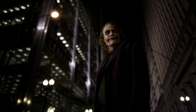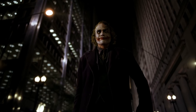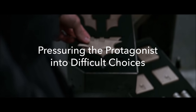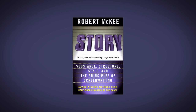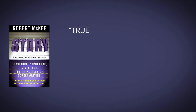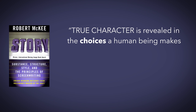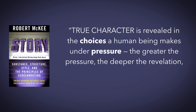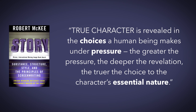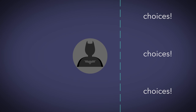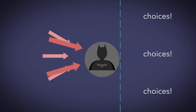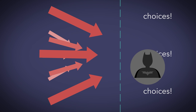But the Joker's plan isn't just to beat Batman. It's to show Gotham his true colors. He does this by pressuring the protagonist into difficult choices. According to Robert McKee, 'True character is revealed in the choices a human being makes under pressure. The greater the pressure, the deeper the revelation, the truer the choice to the character's essential nature.' So in every story, the forces of antagonism must increasingly apply pressure to the protagonist, forcing them to make more and more difficult choices — choices which reveal their true nature.